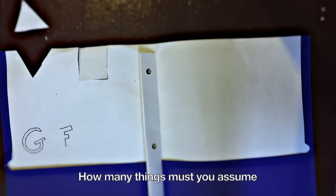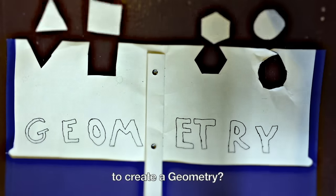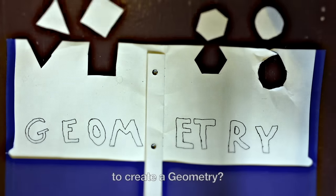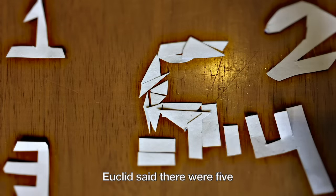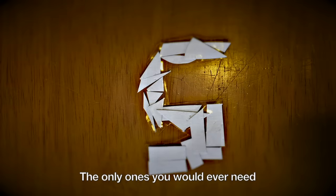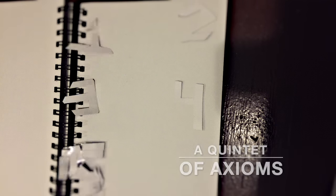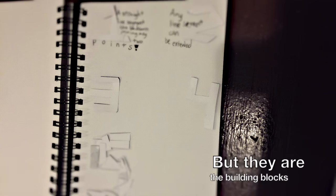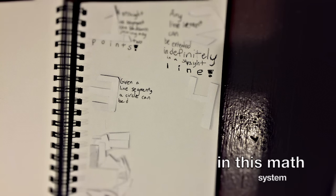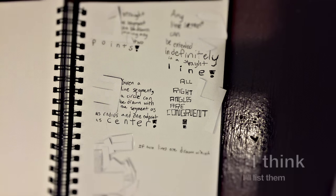How many things must you assume to create a geometry? Euclid said there were five, the only ones you would ever need. A quintet of axioms, so simple that they seem dumb, but they are the building blocks in this math system. And they are so important, I think I'll list them.